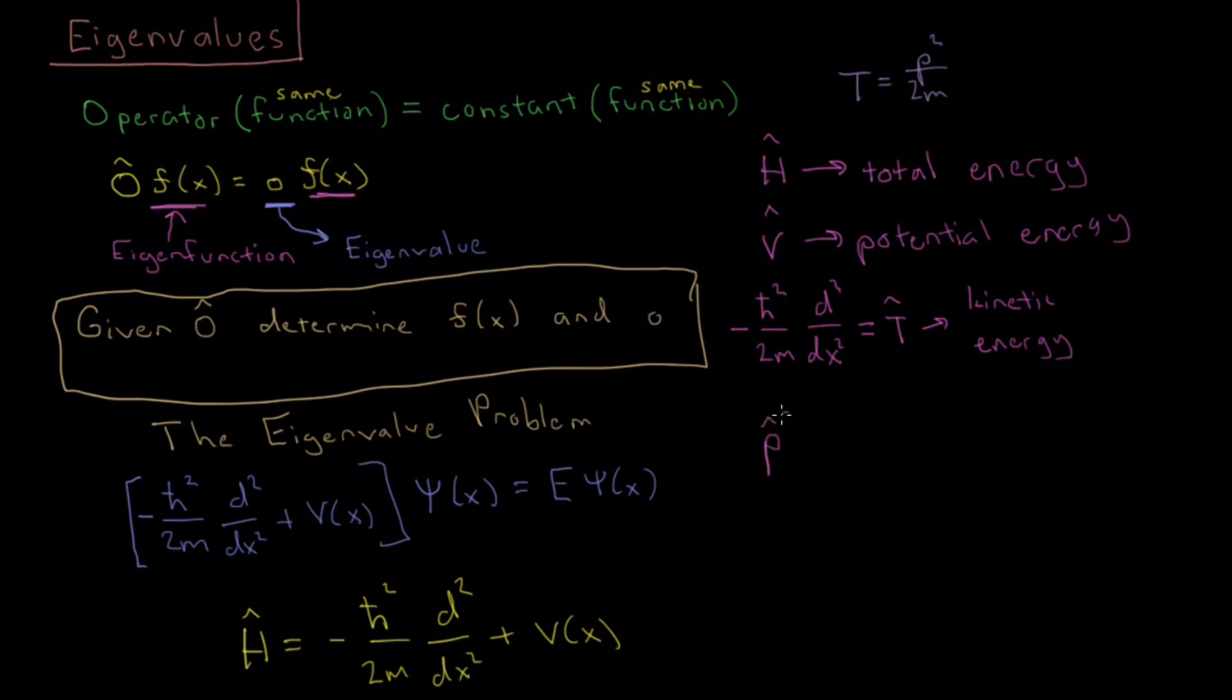So, the operator P squared, the specific form of that, is going to be minus h-bar squared second derivative with respect to x. And that is momentum squared.